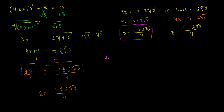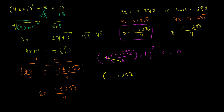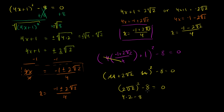So let's substitute it back in. 4 times x — 4 times negative 1 plus 2 root 2 over 4 — plus 1 squared minus 8 is equal to 0. These 4's cancel out, so you're left with negative 1 plus 2 root 2 plus 1 squared minus 8 equals 0. The negative 1 and positive 1 cancel out, so you're left with 2 root 2 squared minus 8 equals 0. When you square this, you get 4 times 2 minus 8 equals 0, which is true. 8 minus 8 equals 0.